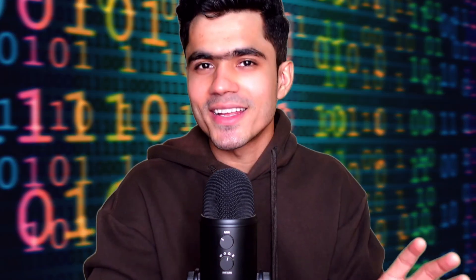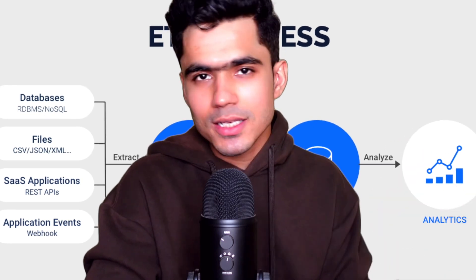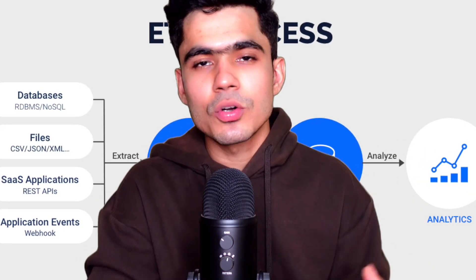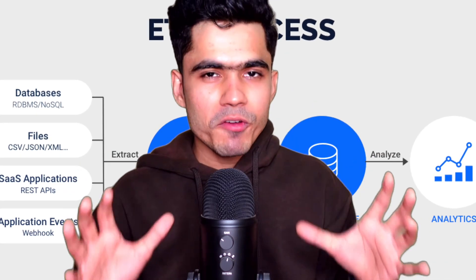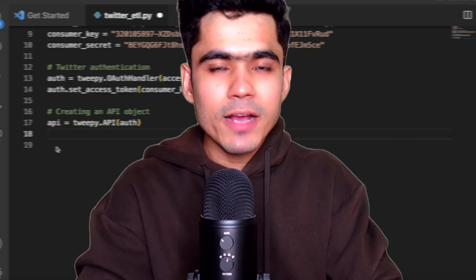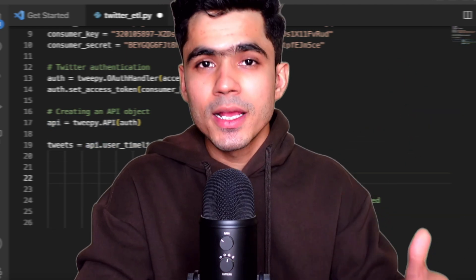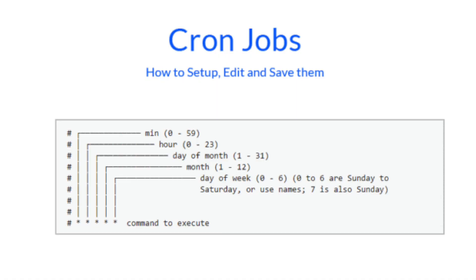But our work does not end here. What we just did was create a simple data pipeline where we extracted the data, transformed it, and loaded it onto a target location — in this case, Amazon S3. But we want to automate this entire process so our code runs every day at a particular time interval. One option is to write a simple Python script, deploy it on a virtual machine, and set up a cron job.